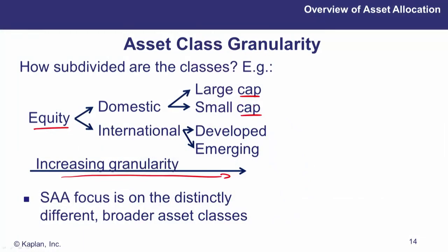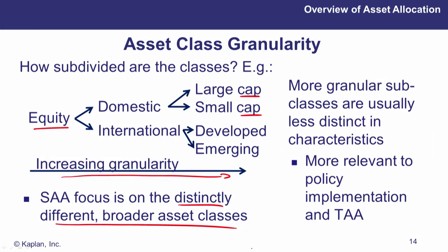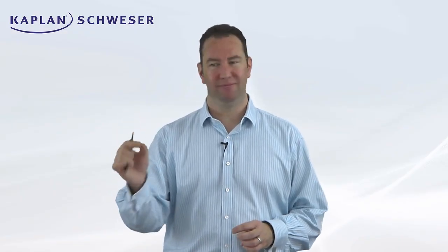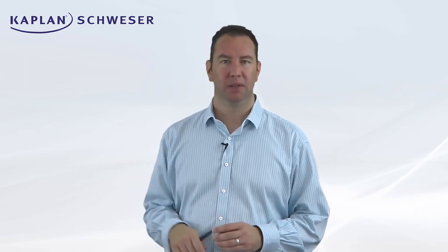From a strategic asset allocation perspective, we don't tend to use much granularity — the most granular we'd get would be domestic and international equities and domestic and international bonds. More granular subclasses are less distinct in characteristics — the individual securities in that asset class become almost identical. Where strategic asset allocation focuses on low granularity classes, tactical asset allocation looks at individual securities and finely defined classes of asset.